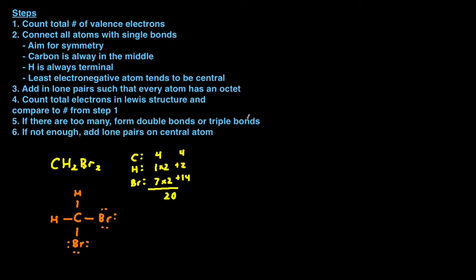Let's move on to another example where we actually have to use step five or step six. The next example is HCN. First step: count the total number of valence electrons. H has one valence electron, carbon has four, and nitrogen has five. Adding those together we get a total of ten valence electrons.